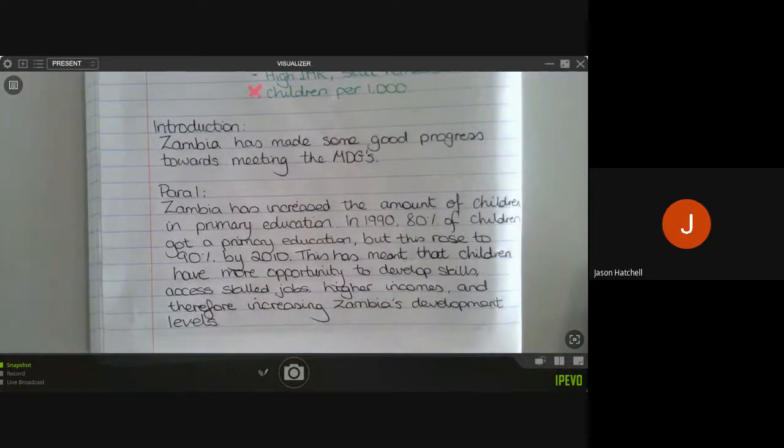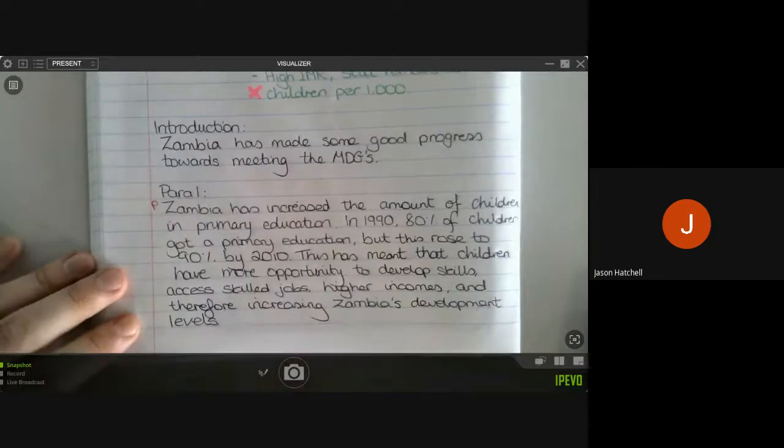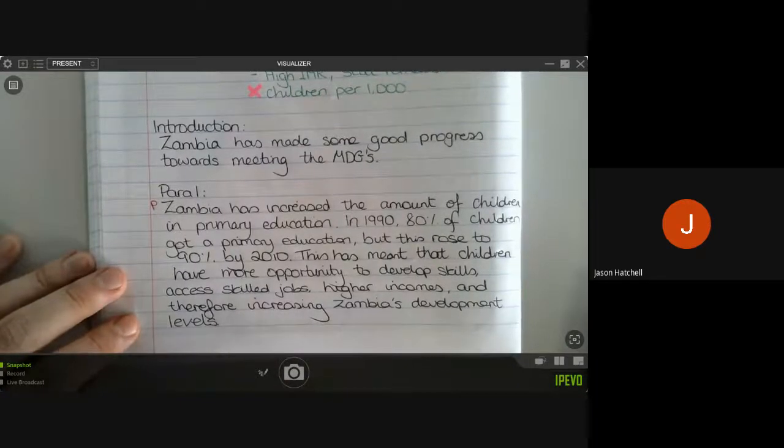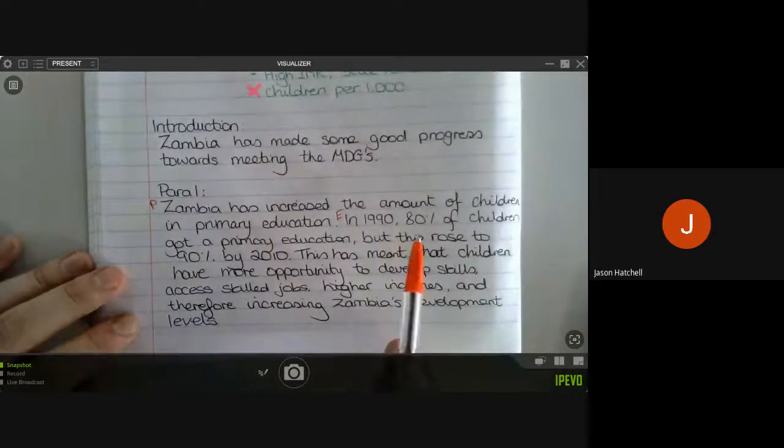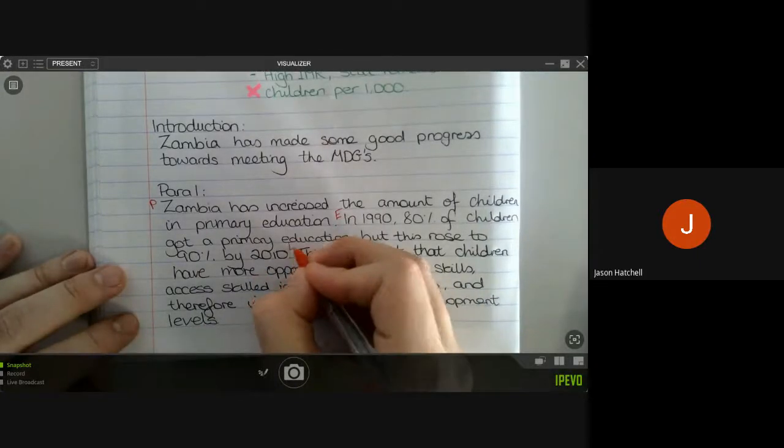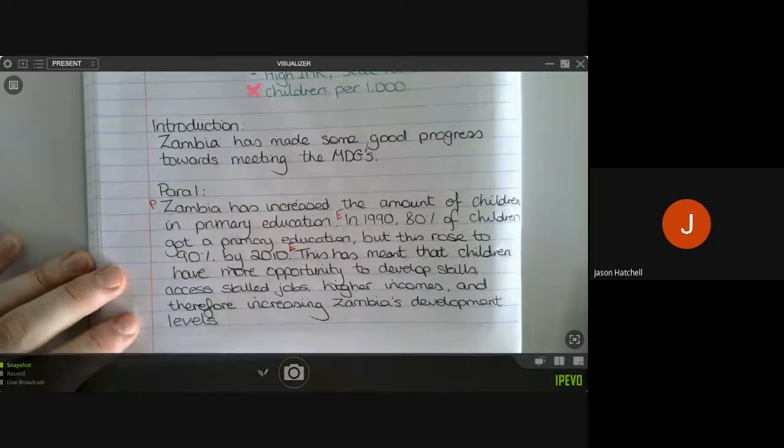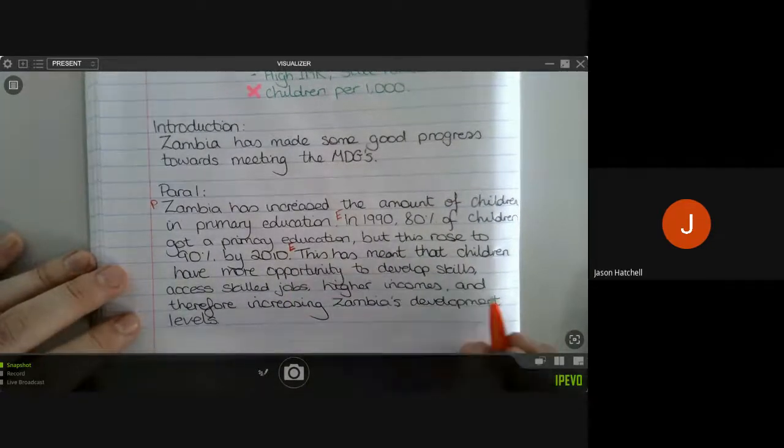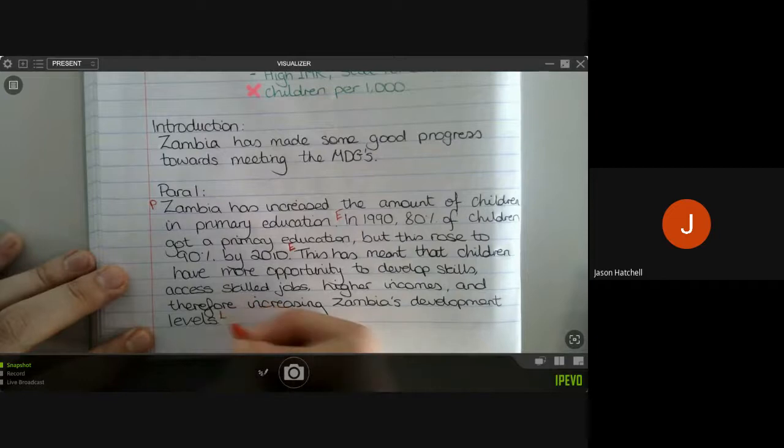So what we've got there is a PEL paragraph. We've made our point—Zambia has increased primary education. We've then given some evidence: 1990, 80%; 90% by 2010. We've then explained what we mean by that. We've linked it to what we're talking about, which is achievement. And at the end, of course, we know that the Millennium Development Goals are all about development. So we've got a link at the very end.